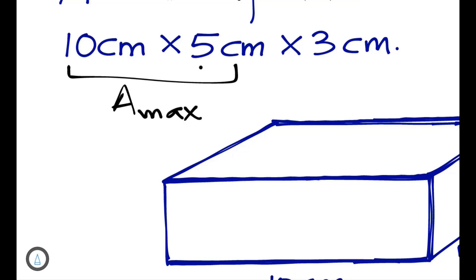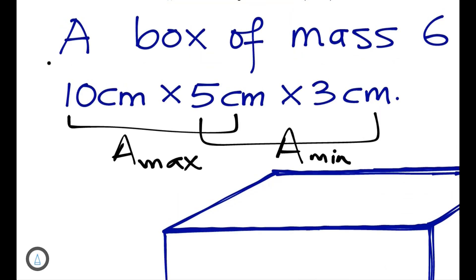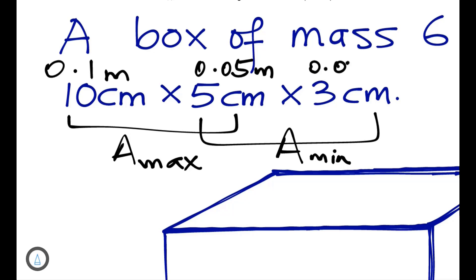Convert each dimension to meters: 10 cm = 0.1 m, 5 cm = 0.05 m, and 3 cm = 0.03 m. Maximum area uses the two largest dimensions: 0.1 × 0.05. Minimum area uses the two smallest: 0.05 × 0.03.